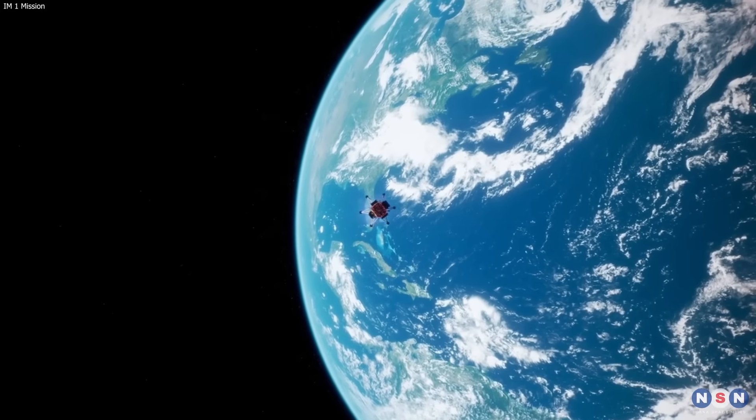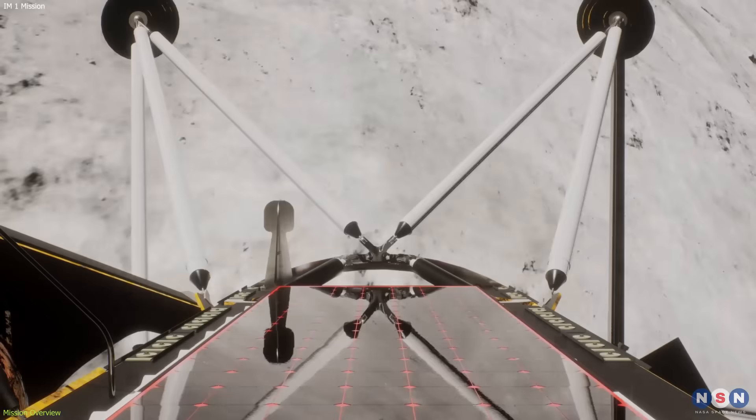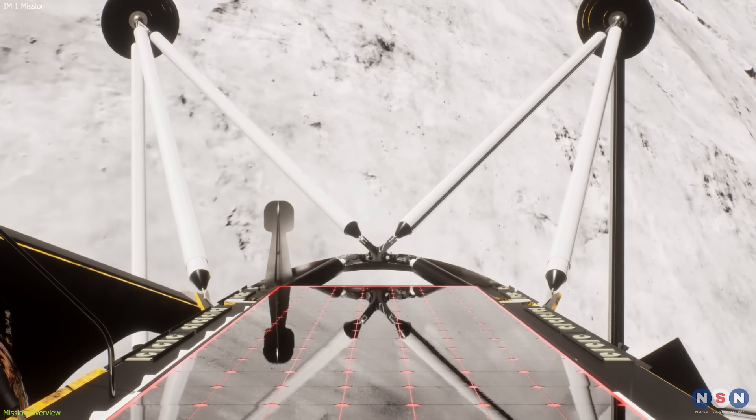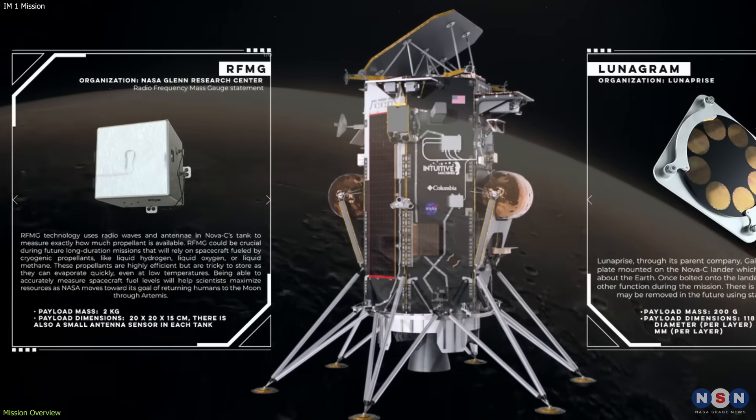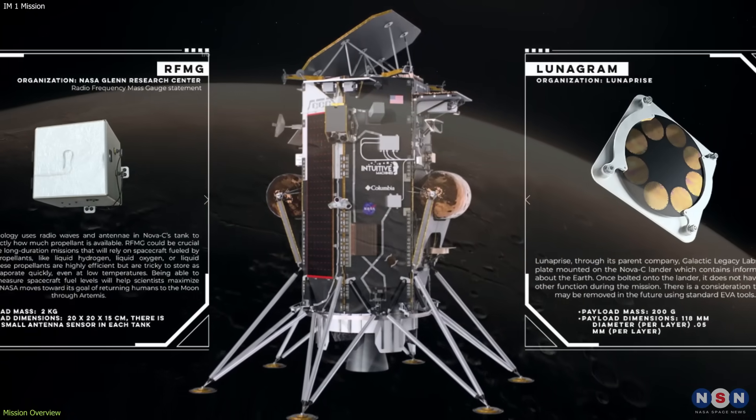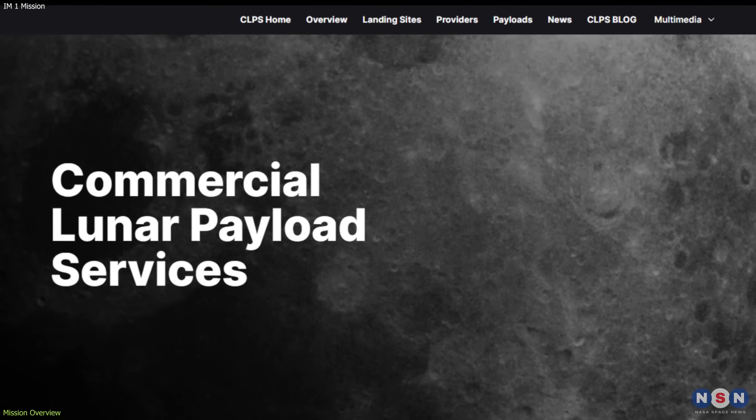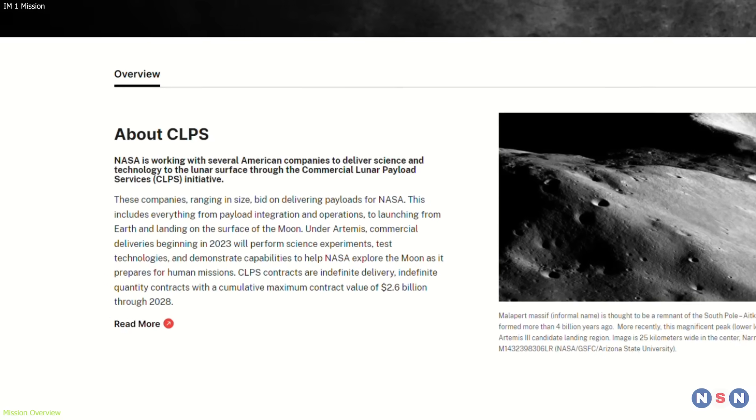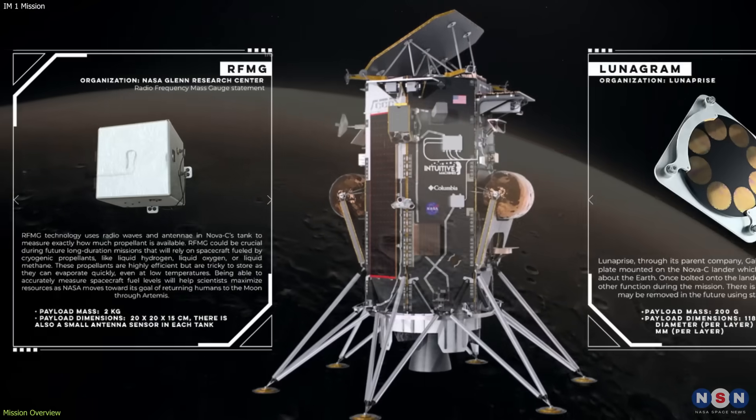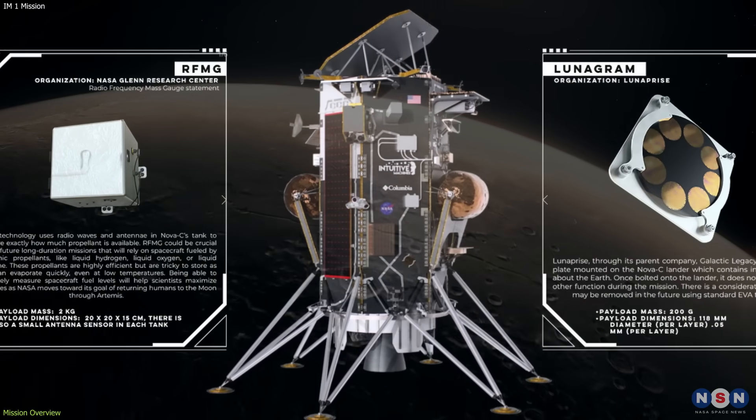The IM-1 mission is the first of its kind. It is the first time that a private company will land a spacecraft on the Moon, and it is the first time that NASA will use a commercial service to deliver its payloads to the lunar surface. This is part of NASA's Commercial Lunar Payload Services Initiative, which allows NASA to partner with private companies to deliver payloads to the Moon at a lower cost and faster pace.